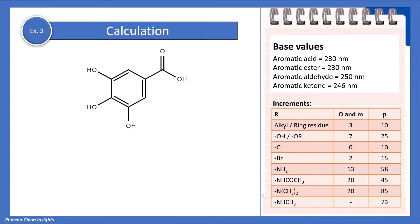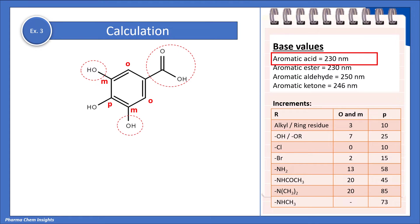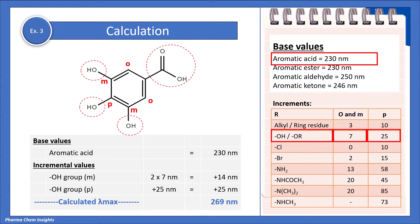Example 3: again we have an aromatic acid group, so the base value is 230 nm. Here we have three OH groups at different positions. The OH groups at the meta positions have an incremental value of 7 nm, and the OH group at the para position has an increment of 25 nm. When we calculate, we get the lambda max as 269 nm.